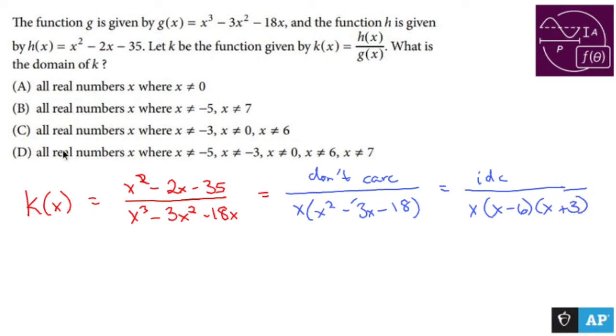Using the zero product property, we find the zeros of the denominator. Set x equal to zero, that gives us zero. If x - 6 equals zero, we get 6. If x + 3 equals zero, we get -3.